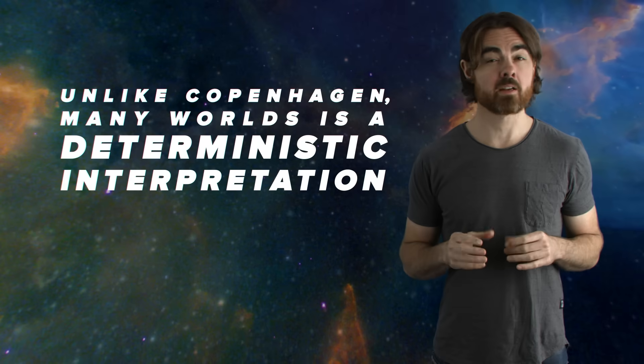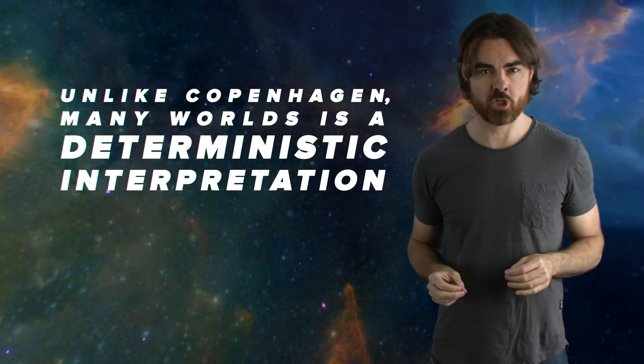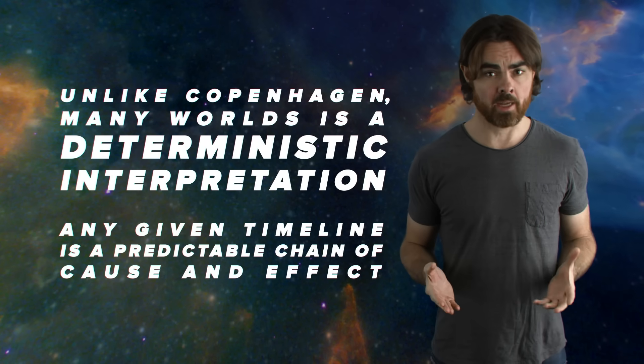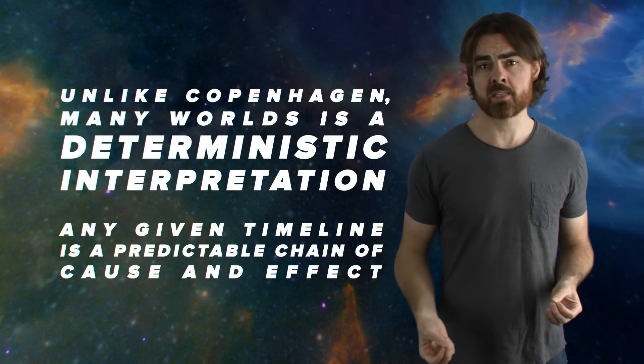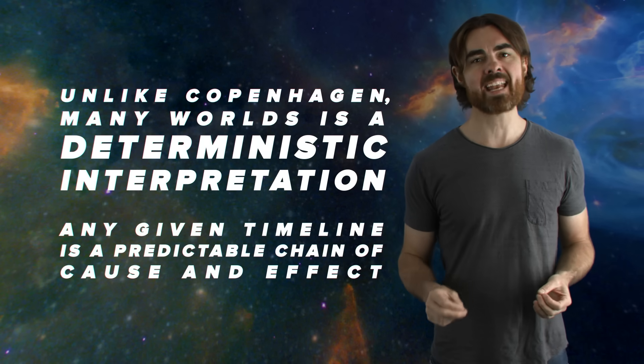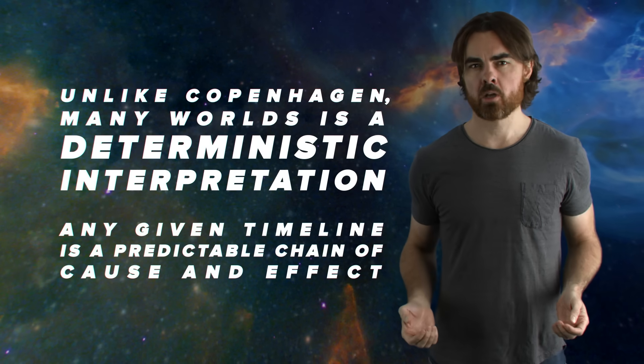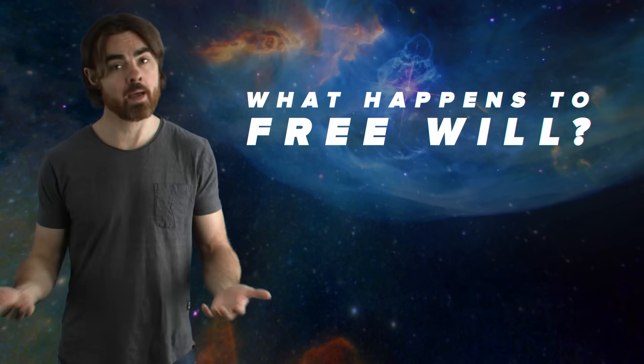Unlike Copenhagen, Many Worlds is a deterministic interpretation. Any given timeline is a predictable chain of cause and effect. It explains the apparent randomness of quantum mechanics with a sort of observer bias. All possibilities are chosen at every junction, and we just happen to be seeing the one that happened in the branch that we occupy. That adds a second possible cause for philosophical unease. In a purely deterministic universe, what happens to free will?